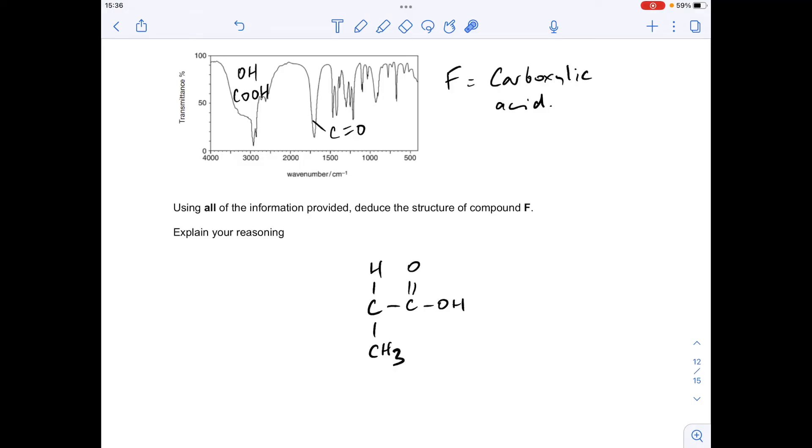Now you'll notice we've got 1, 2, 3 proton environments now. So we can't have any more different proton environments. We haven't got enough oxygens, we've only got two. So we've got another carboxylic acid environment on the other side of the molecule. They're equivalent, so they would still only give one signal. And there's the other two. So that is the answer.